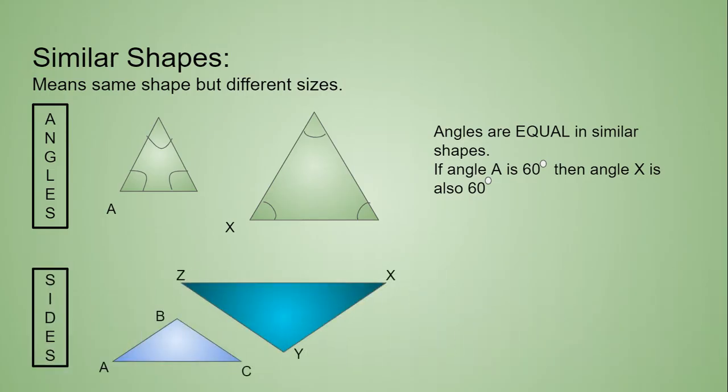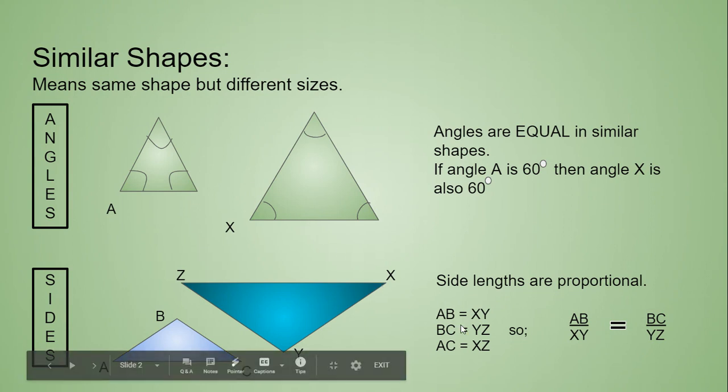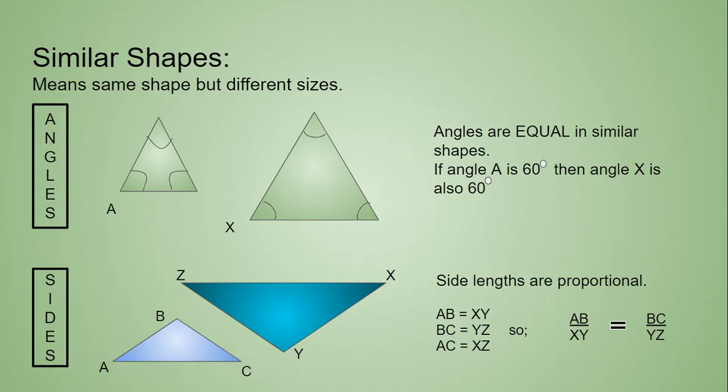For your sides, these are proportional. So first, you have to determine the corresponding sides, which is right here. And with these two triangles, you have line AB is equal to XY. And BC would be equal to YZ. And AC would be equal to XZ.